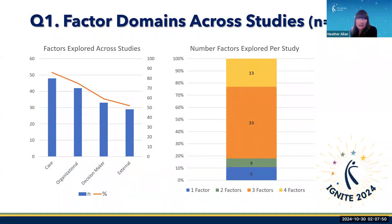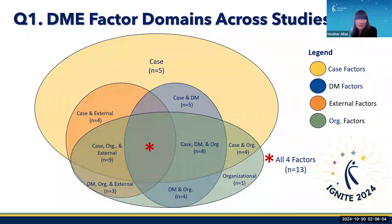The studies we reviewed examined various combinations of DME factor domains. While case factors were the most commonly explored domain, represented in nearly 90% of studies, all but six explored more than one factor domain, with a quarter of studies examining all four. Looking more closely at the constellation of factor domains explored, we see 10 iterations of domain combinations, with a plurality of studies examining all of them. Here we begin to see the complexity inherent in understanding decision-making, and we haven't even explored the factors themselves.